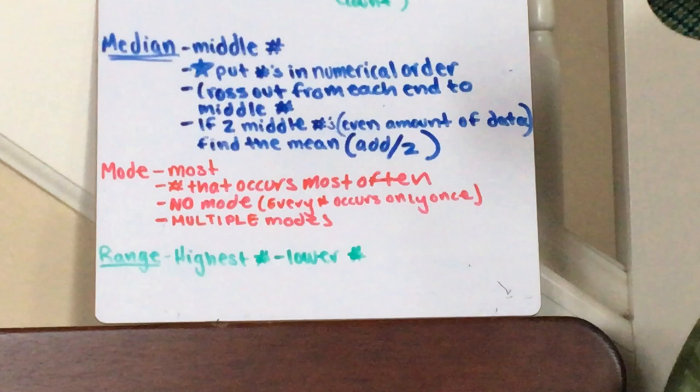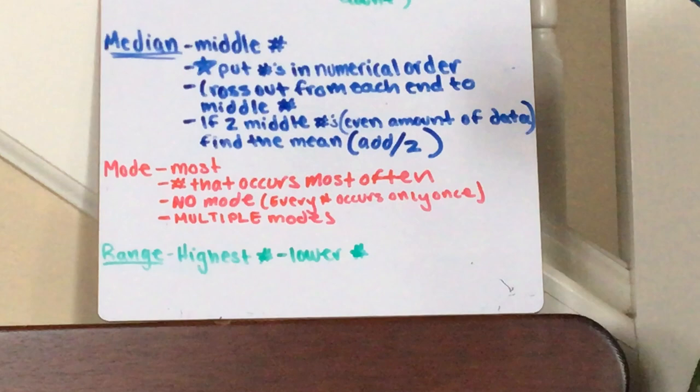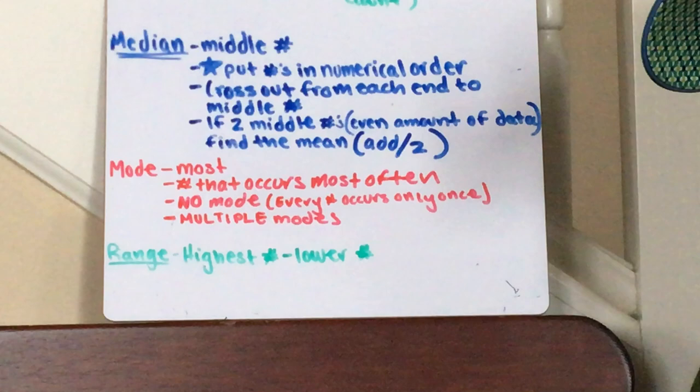If there's an odd amount of data, it's gonna be the middle number. If there is an even amount of data, you have to add the two middle numbers and divide by two. You have to take the average or the mean of the two middle numbers.